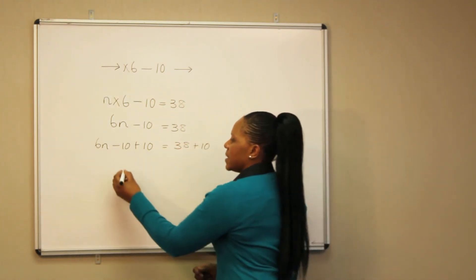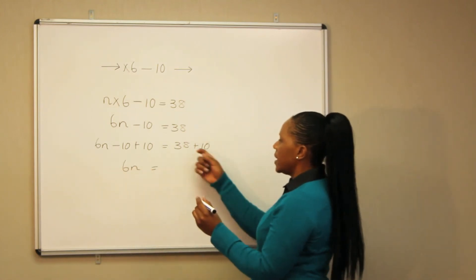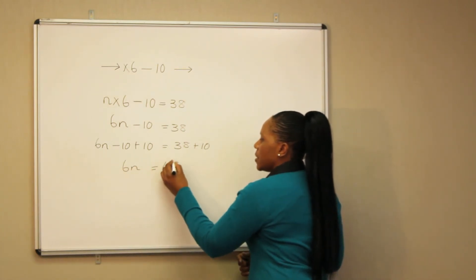Which leaves us with 6n is equal to 38 plus 10, which is 48.